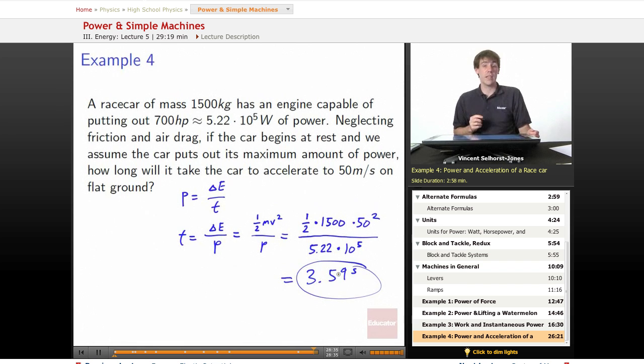And that tells us how long it would take that car to accelerate from a dead stop to going at 50 meters per second. And if you happen to live in America and you're wondering how fast that is, that's equivalent to 110 miles per hour. So 3.59 seconds to get to 110 miles per hour or 50 meters per second, that's pretty darn good and explains why race cars are so powerful.